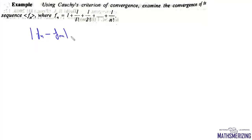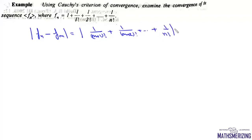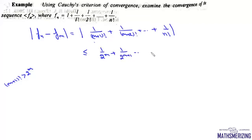We find mod of fn minus fm, which is 1 upon factorial (m+1) plus 1 upon factorial (m+2), up to 1 upon factorial n. Since factorial (m+1) is greater than 2 to the power m, this is less than or equal to 1 upon 2^(m+1) plus 1 upon 2^(m+2), up to 1 upon 2^(n-1).